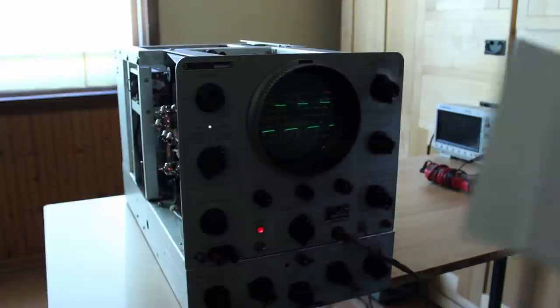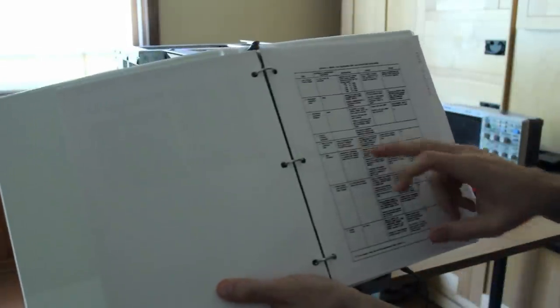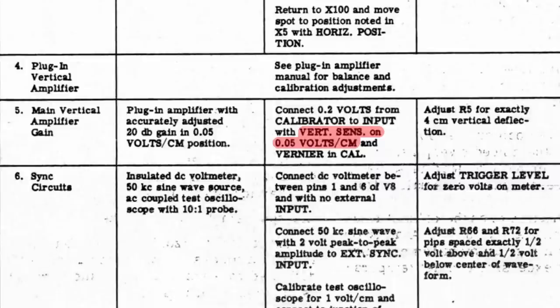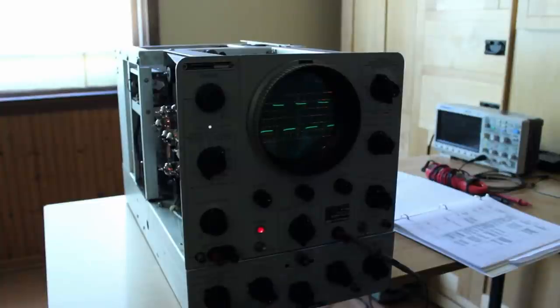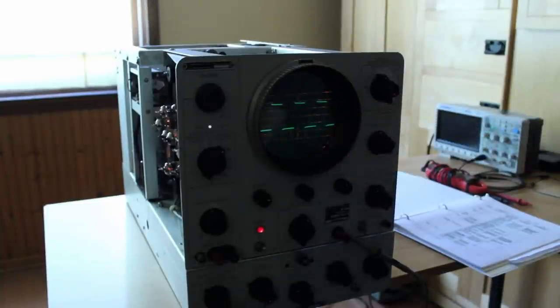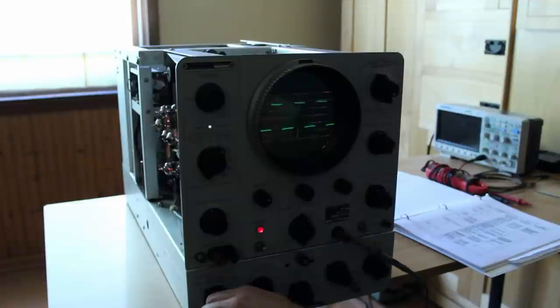I've got this set up like the manual outlines here for adjusting the vertical amplifier gain. This says to connect 0.2 volts from the calibrator to the input and set our vertical sensitivity to 0.05, then adjust R5 for exactly four centimeters of vertical deflection. I've got R5 maxed out and I'm not quite at four centimeters—I'm at about three and a half centimeters.